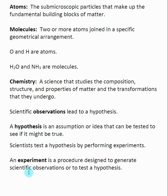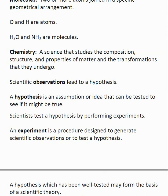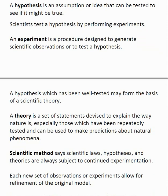An experiment, which is very fundamental to chemistry, is a procedure designed to generate scientific observations or to test a hypothesis. In lab, you'll be doing quite a few experiments — generating data. At the far end, if a hypothesis has been well tested through many different experiments, each providing supporting evidence, you begin to come up with a scientific theory.